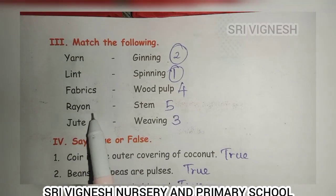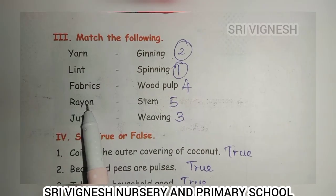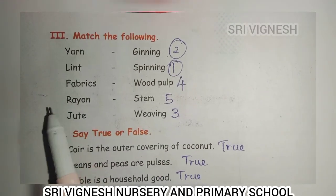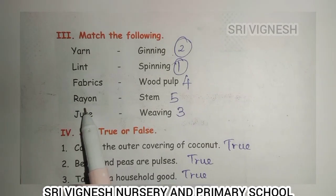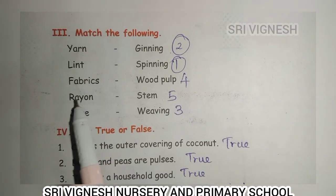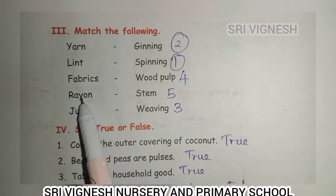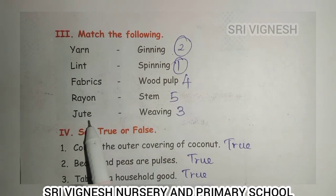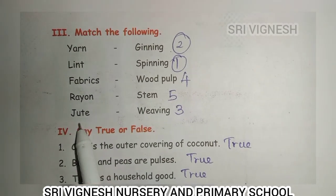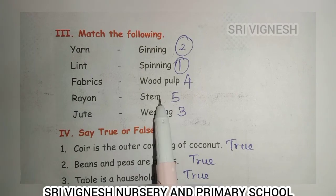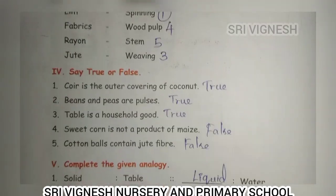So rayon is one cloth. We know silk cloth, cotton cloth. Rayon is made from wood pulp. Next is jute — jute is a plant, obtained from the stem of the jute plant.